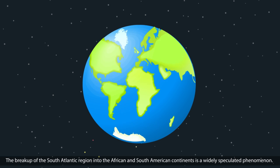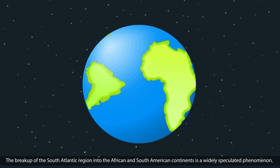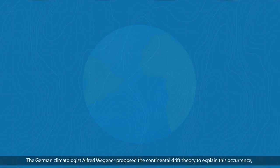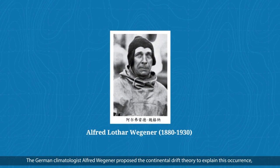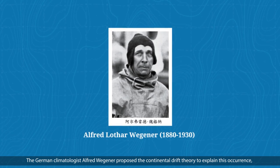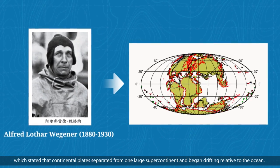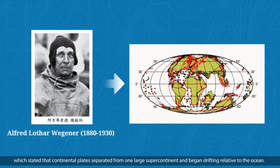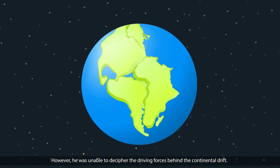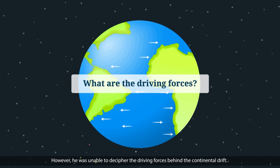The breakup of the South Atlantic region into the African and South American continents is a widely speculated phenomenon. The German climatologist Alfred Wegener proposed the continental drift theory to explain this occurrence, which stated that continental plates separated from one large supercontinent and began drifting relative to the ocean. However, he was unable to decipher the driving forces behind the continental drift.